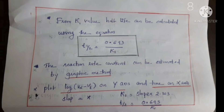The reaction rate constant can also be estimated by the graphic method. Plot log of V infinity minus Vt on the y-axis and time on the x-axis. This gives a straight line. Find the slope of that straight line and multiply it by 2.303 to get the K1 value. Then calculate T½ using the equation 0.693 divided by K1.